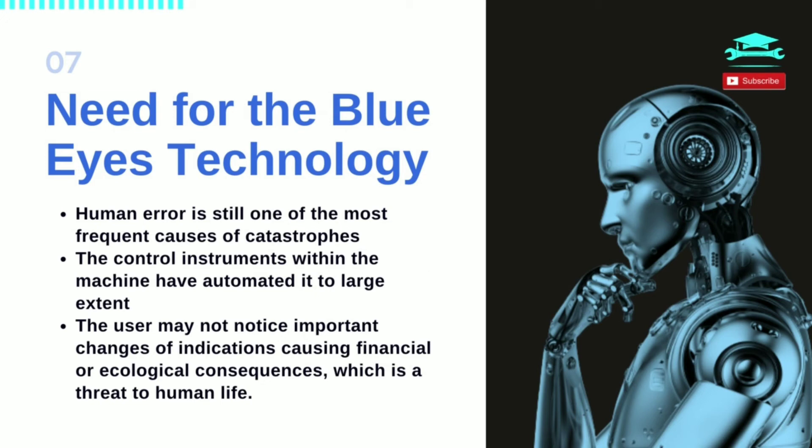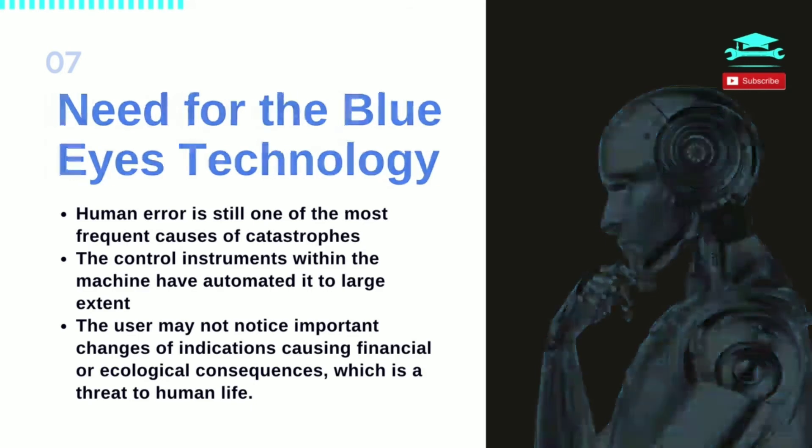In large control rooms, wiring the operator to the central system is a serious limitation of his mobility and disables his operation. The wireless link between the sensors worn by the operator and the supervising system offers a new way to improve overall system reliability and safety.